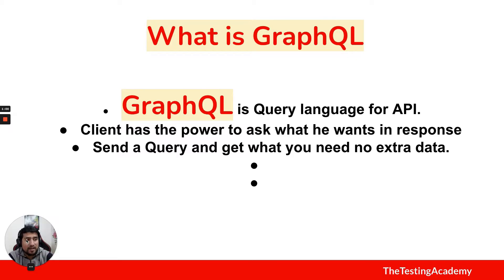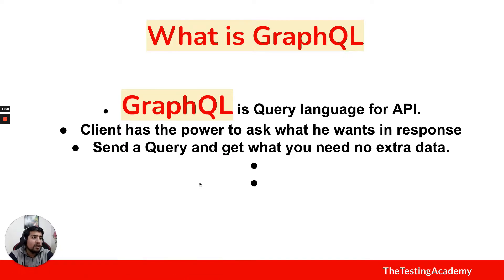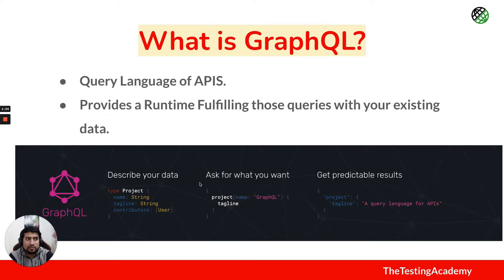In GraphQL you can send a query rather than a payload and it will give you the exact results. That's how GraphQL is very powerful. You can describe your data, exactly what you want. For example, in this diagram you are asking only for taglines in a project, and it will give you only the taglines. It's just a query language for APIs, and it is more powerful than REST - I think it's the future after REST.